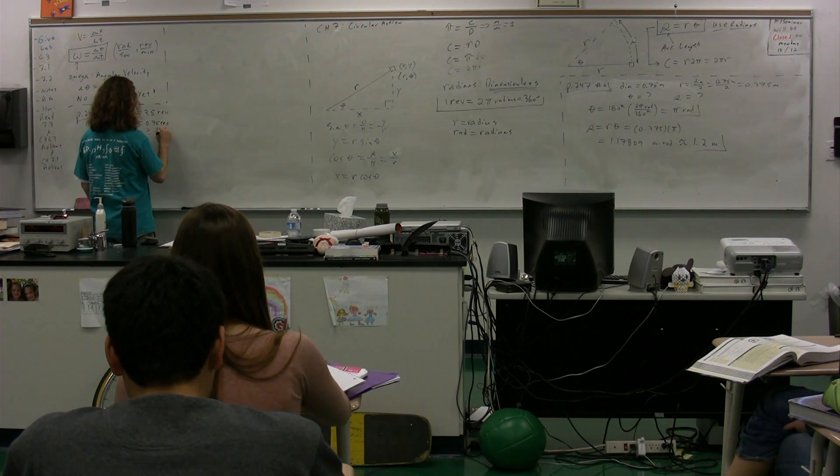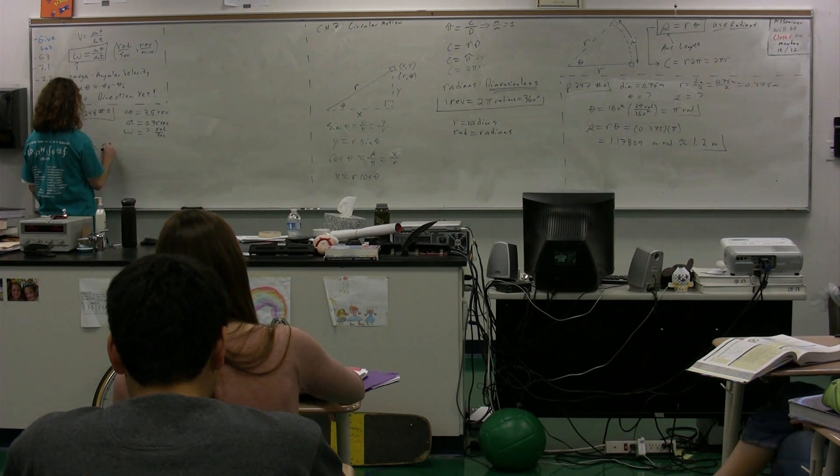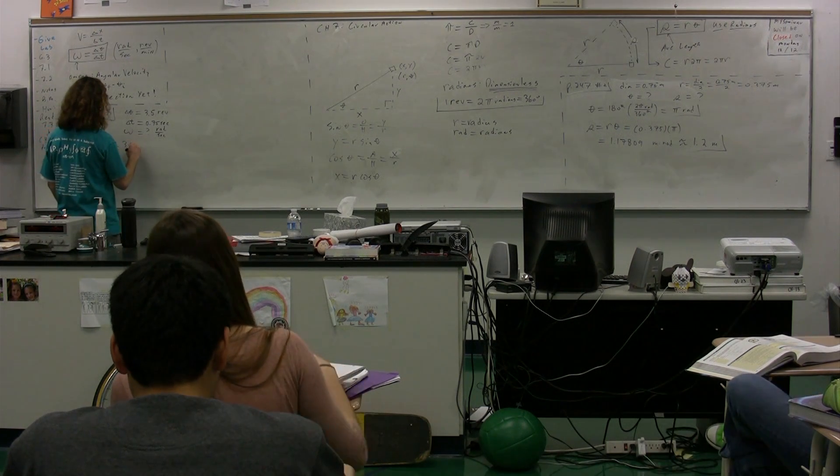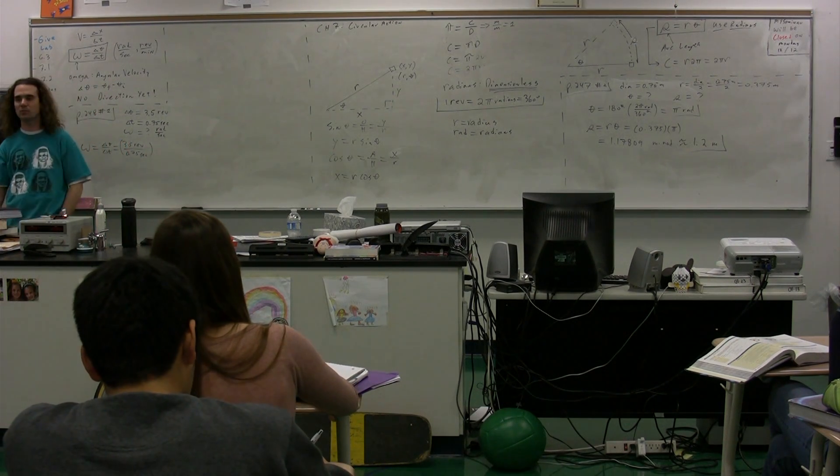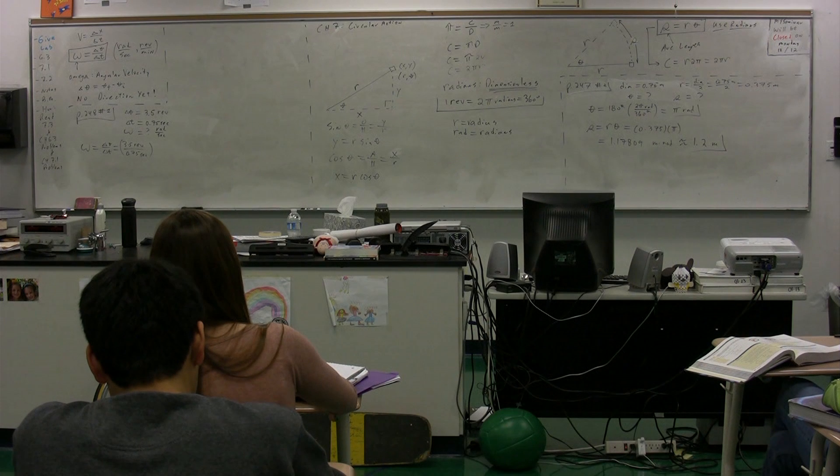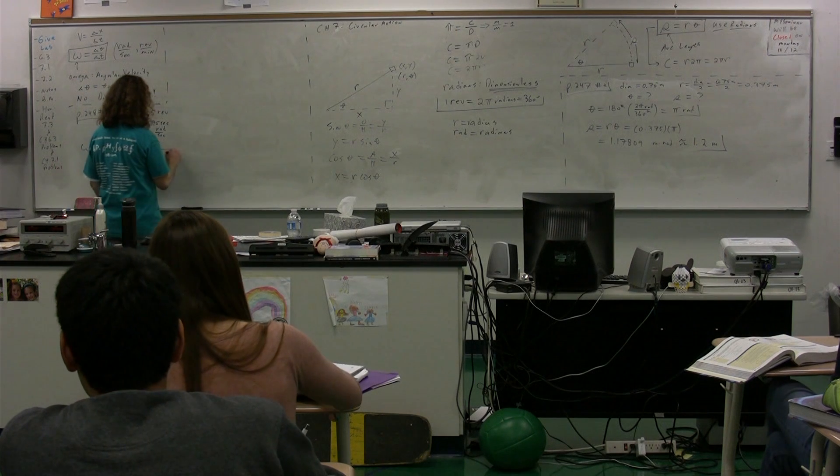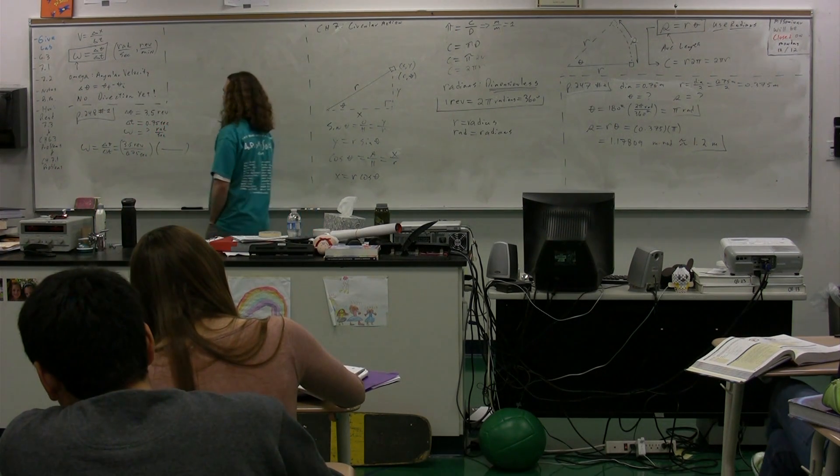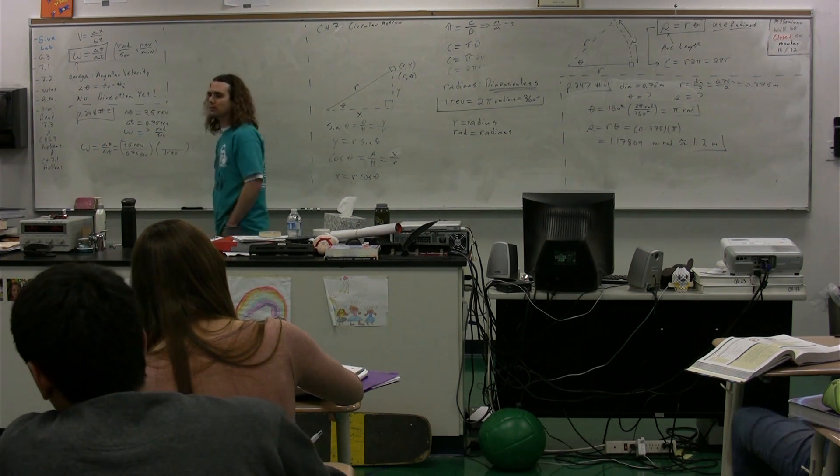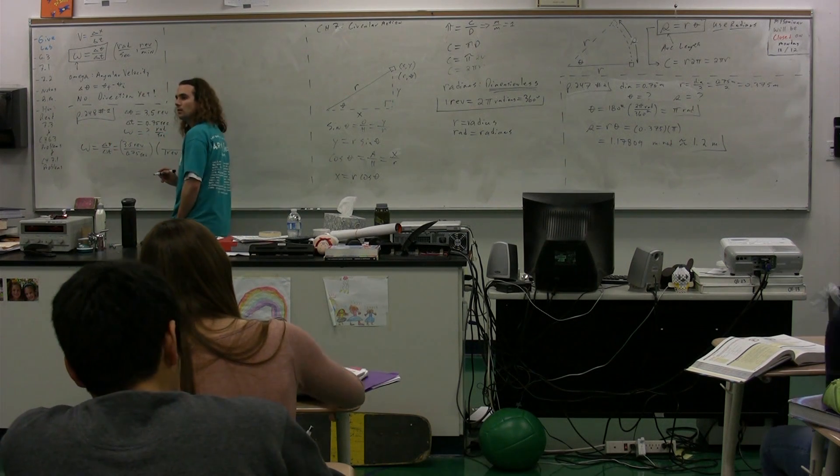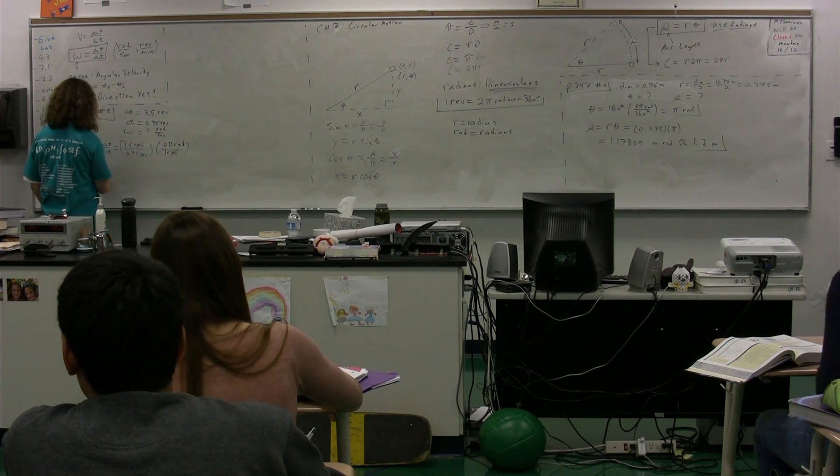I want to figure this out in radians per second. Angular velocity equals change in theta over change in time, or 3.5 revolutions divided by 0.75 seconds. I need to convert this into radians per second. What's the same as one revolution? 2 pi radians. So the revolutions cancel out, and we're in radians per second.